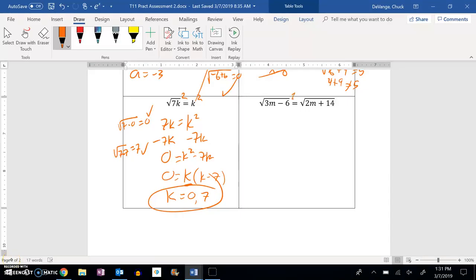So for this sixth one, this number six, I'm going to square both sides, get rid of those square roots. I get 3m minus 6 equals 2m plus 14.